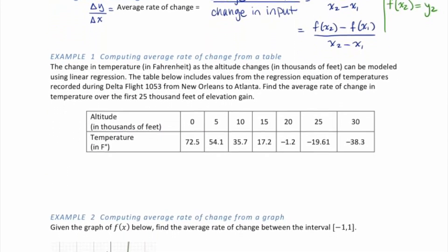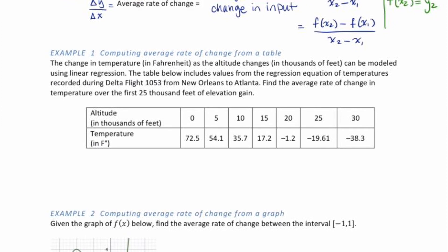Example 1: we're going to compute the rate of change from a table. The change in temperature in degrees Fahrenheit as the altitude changes in thousands of feet can be modeled by linear regression. The table below includes values from the regression equation of temperatures recorded during a particular Delta flight. Find the average rate of change in temperature over the first 25,000 feet of elevation gain.